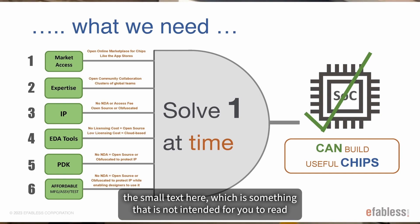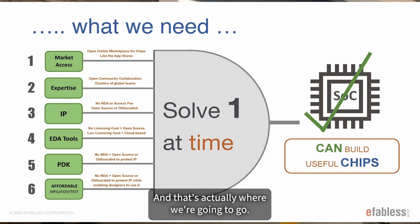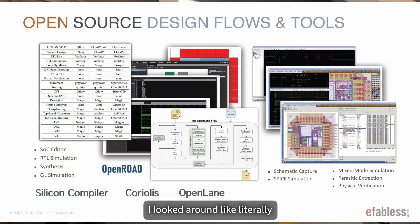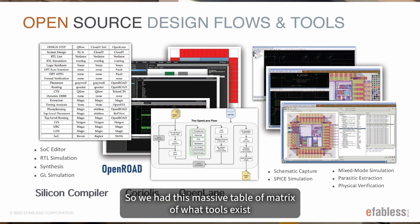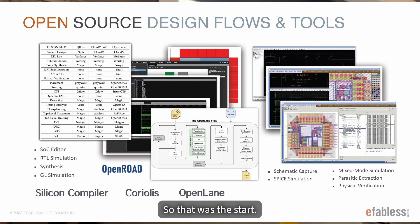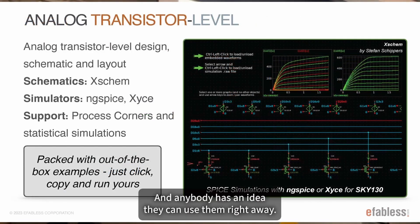If you notice, the word 'open' and 'open source' is all over the place — that's where we're going. I had a collaborator and we built a massive matrix of what tools exist and what they can or cannot do, and actually tried them. That was the start. You can give these tools to anyone, anywhere, without permission from anyone — and anybody with an idea can use them right away.